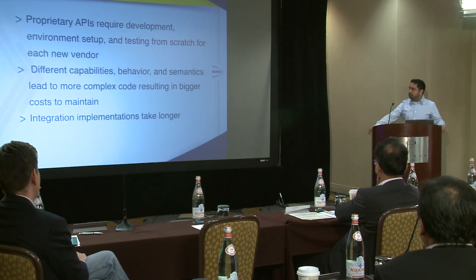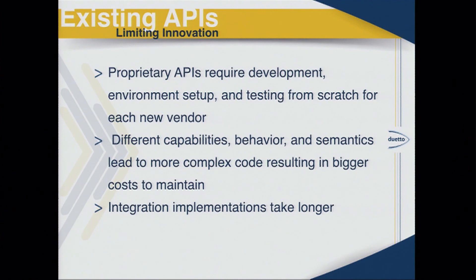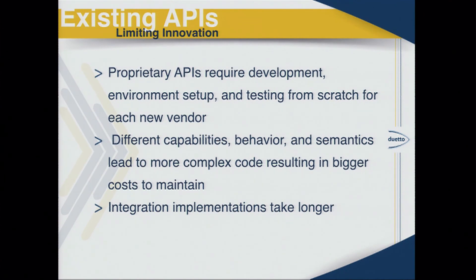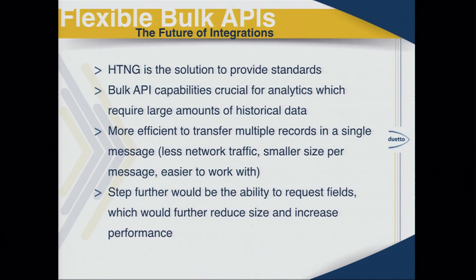Thanks, Marco. As most of you are VPs of technology and heads of IT departments, pretty much what's on this slide is what you've seen in real life: proprietary APIs require development, environment setup, and testing. For every new vendor you're trying to integrate with, you basically have to start from scratch. Different vendors have different capabilities, behavior, and semantics, and they lead to more complex code resulting in bigger costs to maintain — so integration implementations take longer. HTNG was the solution to provide standards so that when you talk to one vendor, you don't have to start from scratch again.